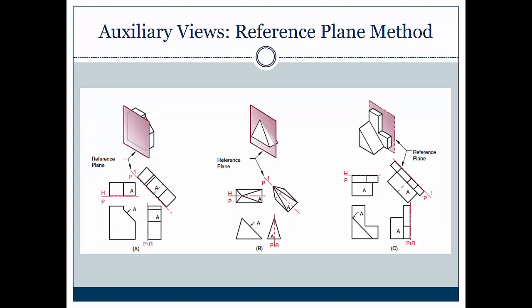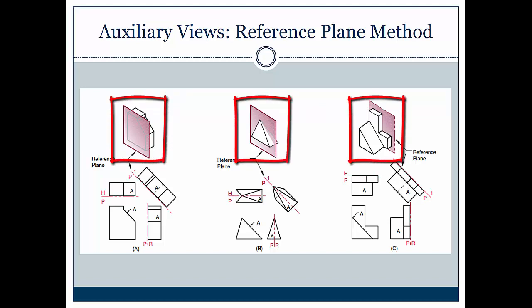Another method of attaining auxiliary views is the reference plane method. The reference plane method of creating an auxiliary view is simply a variation of the fold line method. The reference plane method is a technique that locates a plane relative to the object instead of suspending the object on a box. The reference plane can be positioned anywhere relative to that object.